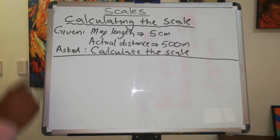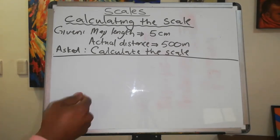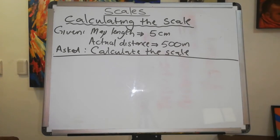So we have been given the following information. We have been given a map length of 5 cm and an actual distance of 500 m. With this information, we have to calculate the scale of this map.